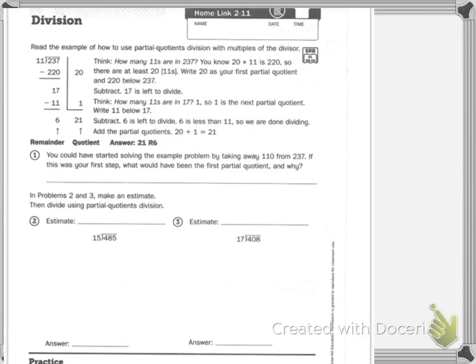Division. Read the example of how to use the partial quotients division with multiples of the divisor. So, we have 237 divided by 11. We needed to think how many 11s are in 237. We know 20 times 11 is 220, so there are at least 20 11s. We wrote the 20 here as the first partial quotient and 220 below 237.